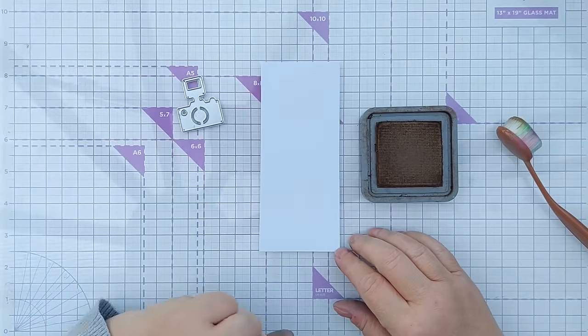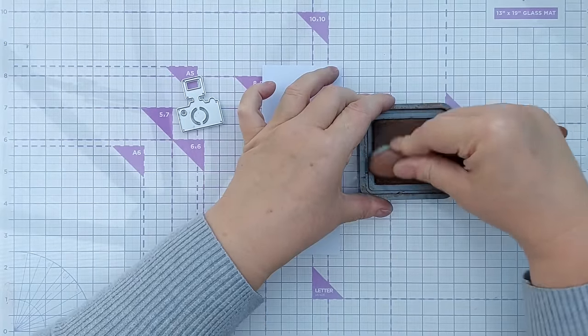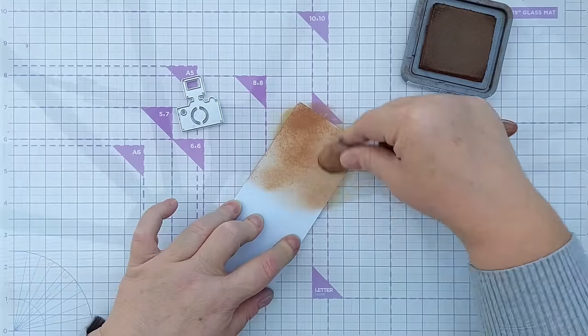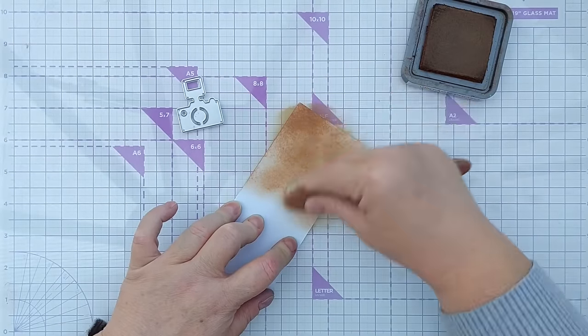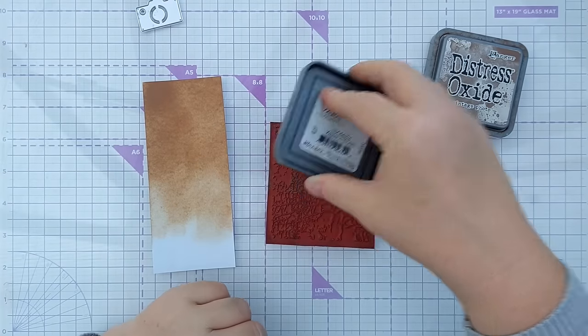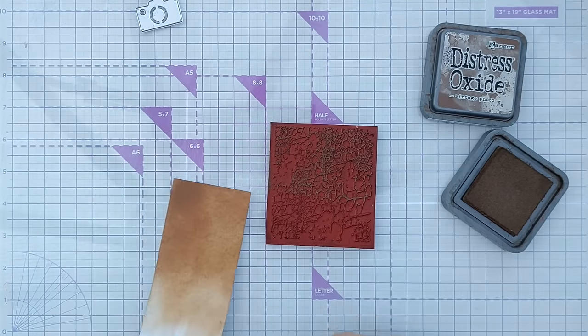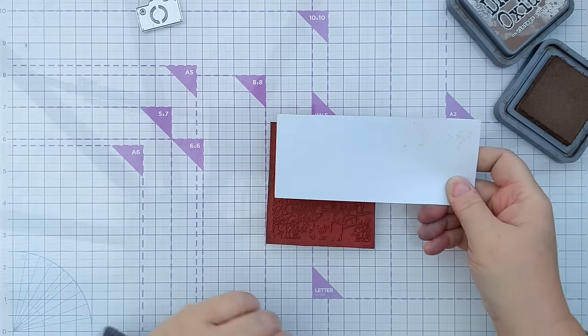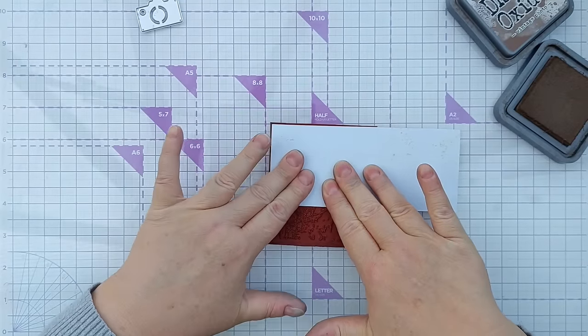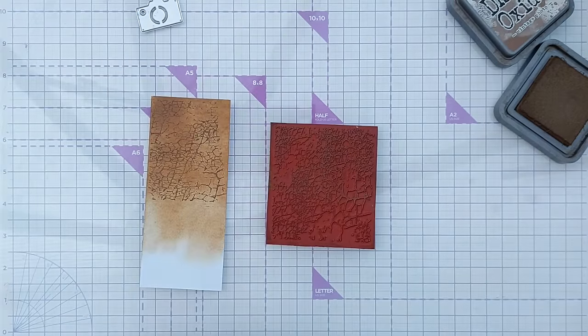For my first card, I'm going to use this camera die to create a camera icon for the front of my card. I'm going to color this smooth white cardstock with Vintage Photo Distress Oxide, which I think works very well with the camera. For my stamping, I'm going to use this Crackle Stamp and Walnut Stain, which is a darker brown than the vintage photo. I'll just press this down, give it a good press without shifting the card. And we've got some nice crackle on there.